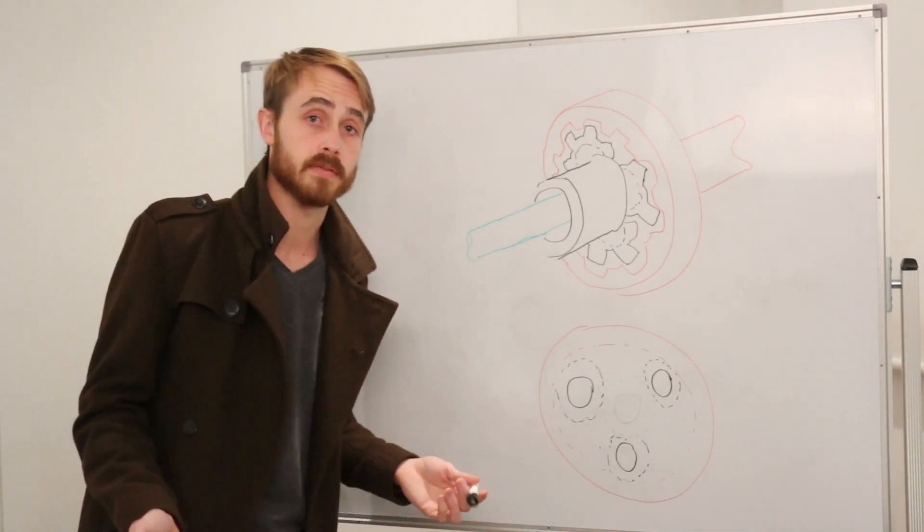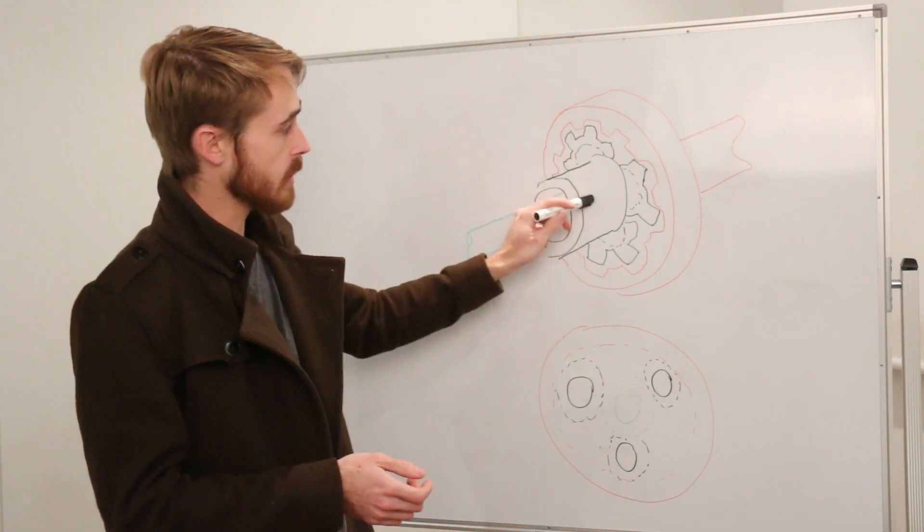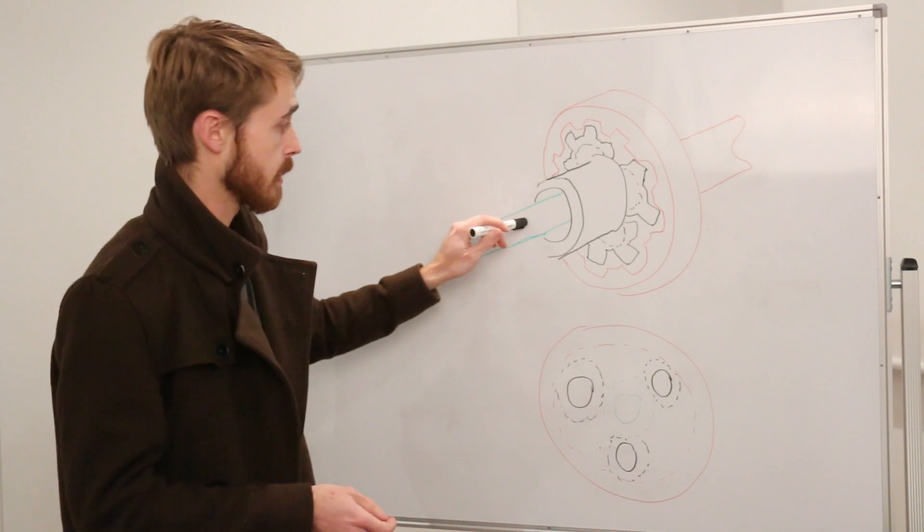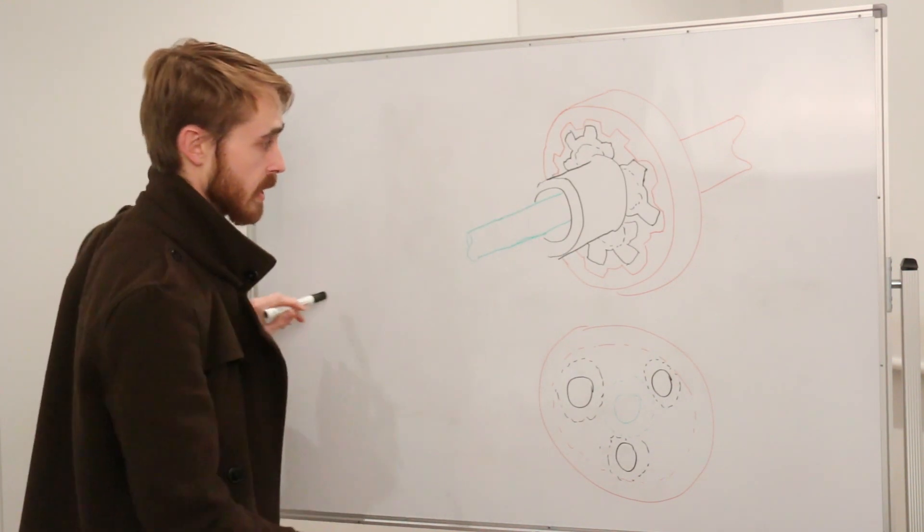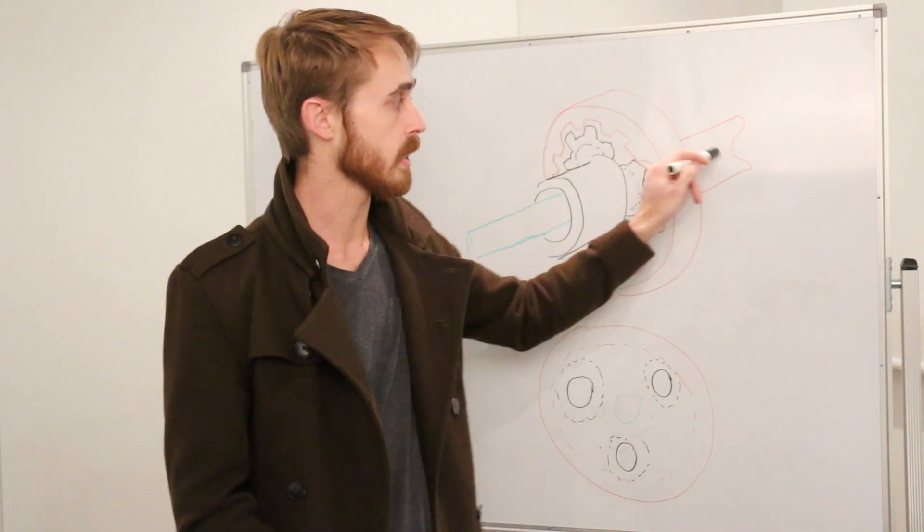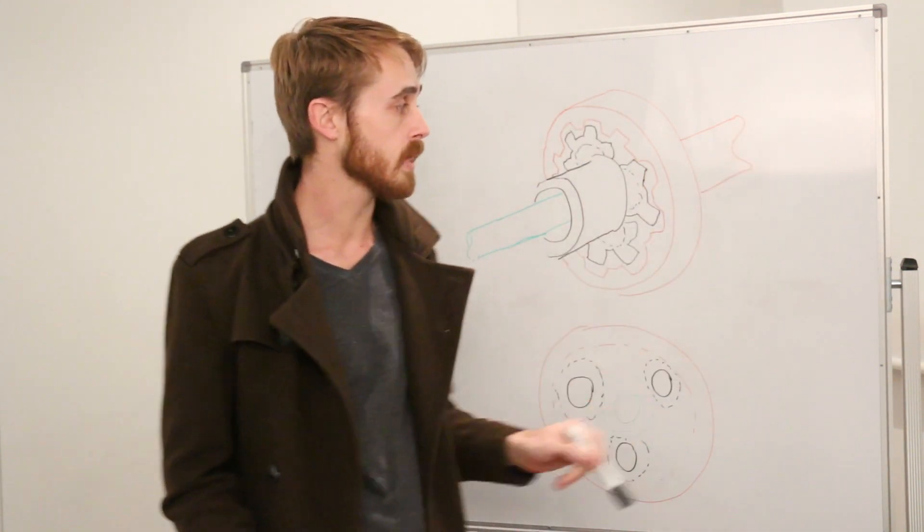So how does this relate to our differential? Well, in this case, if we can imagine our engine driving a gear on this black planet carrier, and then this green sun gear going off to our front differential, and this red ring gear going off to our rear differential...